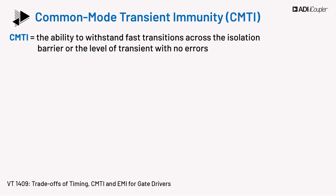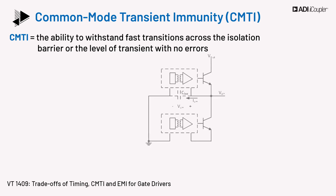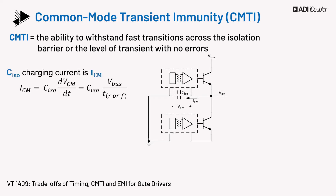Common mode transient immunity, CMTI, is the ability of an isolated gate driver to withstand fast transitions across the isolation barrier. It is the level of transients across the barrier with no errors in the system, and is given in units of kV per microsecond, or volts per nanosecond. In half bridges, the ground of the high side gate driver moves in sync with the midpoint voltage of the half bridge. The converter switching action charges and discharges the parasitic capacitance, CISO, across the isolation barrier. CISO charging current is the common mode charging current defined as ICM, which is equal to the product of CISO and the slew rate at the switch node.